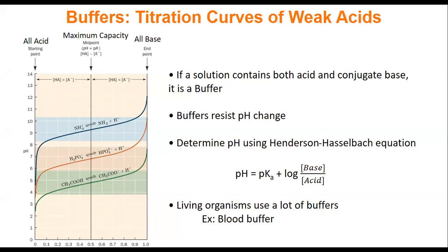But in biochemistry, generally what we're more interested in are buffers. A buffer is a solution made out of both acid and its conjugate base. Just as a reminder, the only difference between an acid and its conjugate base is a proton. For this system to work, both acid and base have to be weak. If it's a strong acid or a strong base, that's not actually a buffer. So you need a conjugate pair and they both have to be weak.